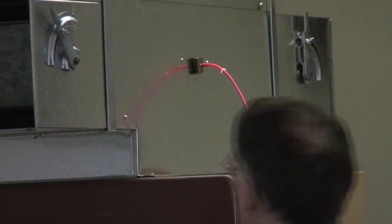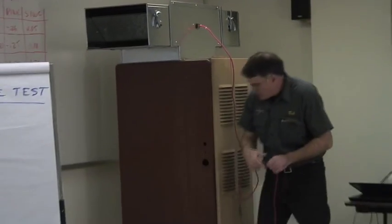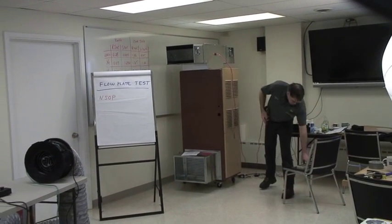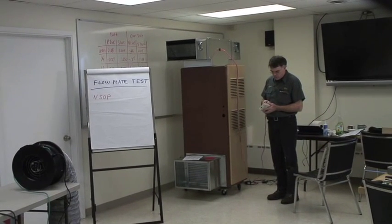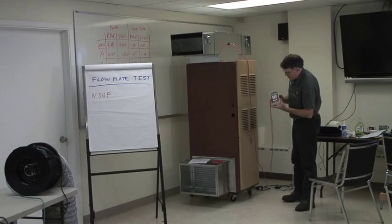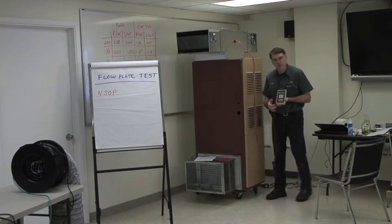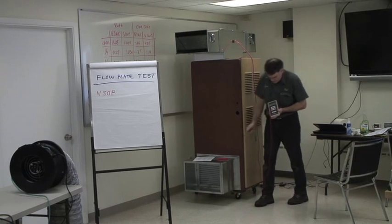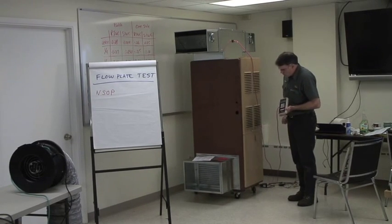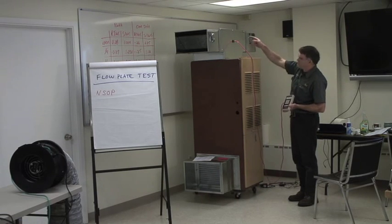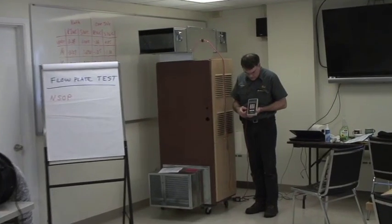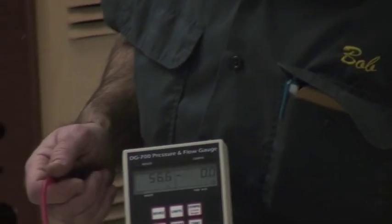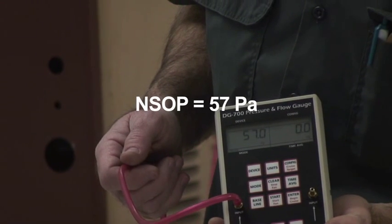This is just with our standard filter in, as though we weren't going to actually do any additional testing. We're going to hook up our pressure tap to our gauge. Turn it on. Conventionally just go on the input side with this gauge, on the A side I should say. We have our air going in and coming out the top, and we have an NSOP of about 57 Pascals.